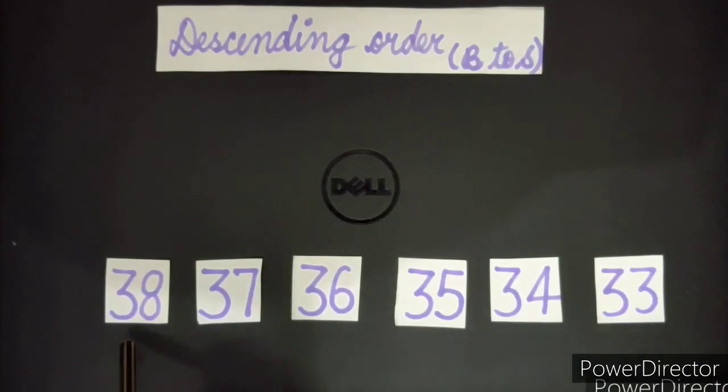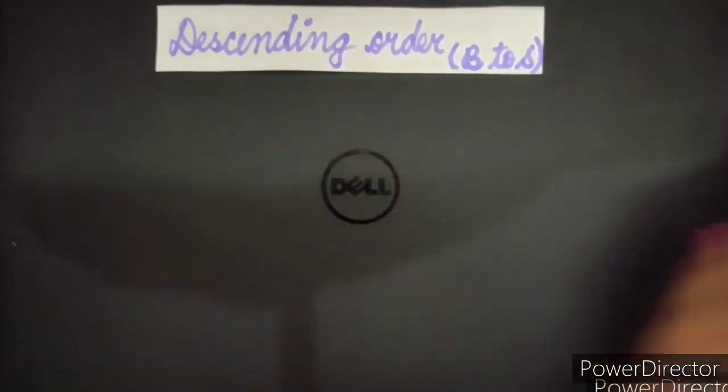So it's descending order 38, 37, 36, 35, 34, 33. We started with a big number and we reached the small number. Big to small. Let's take one more example.